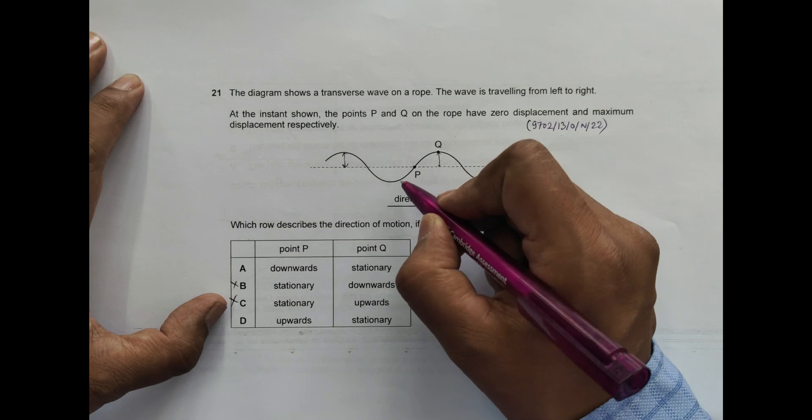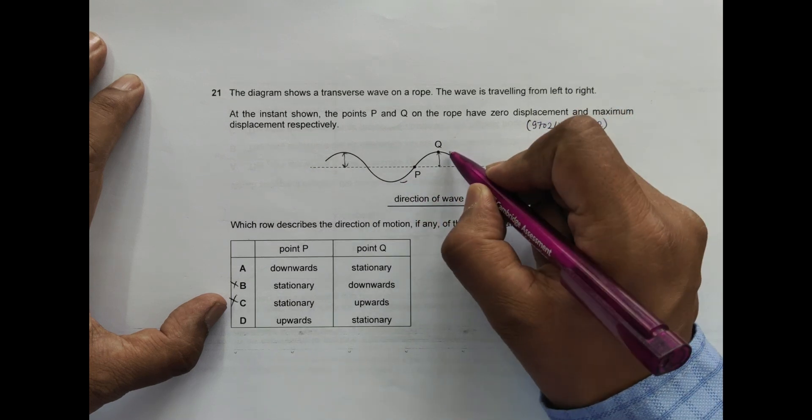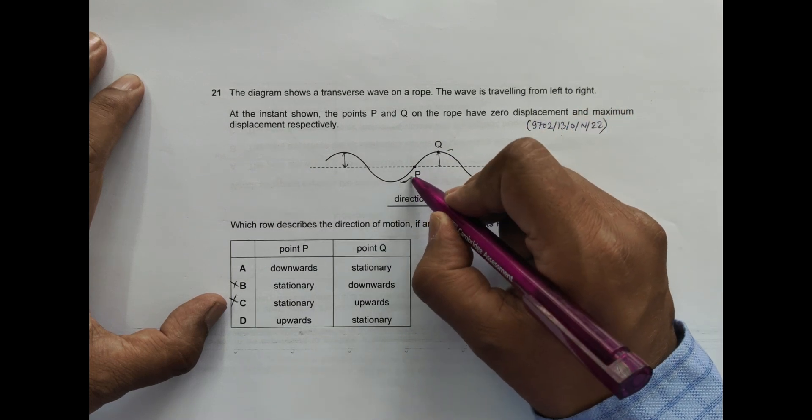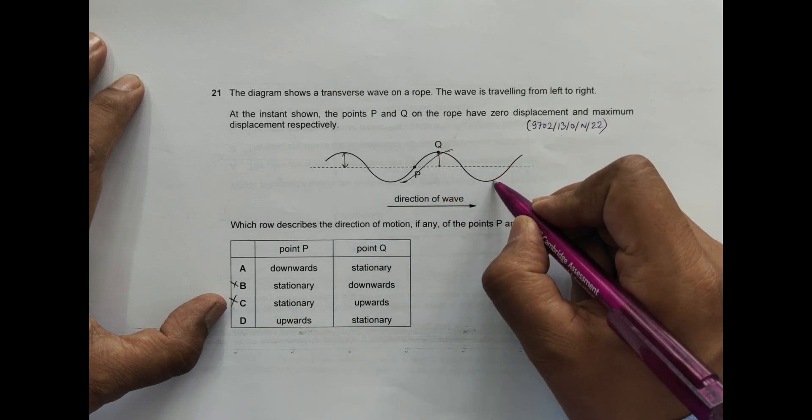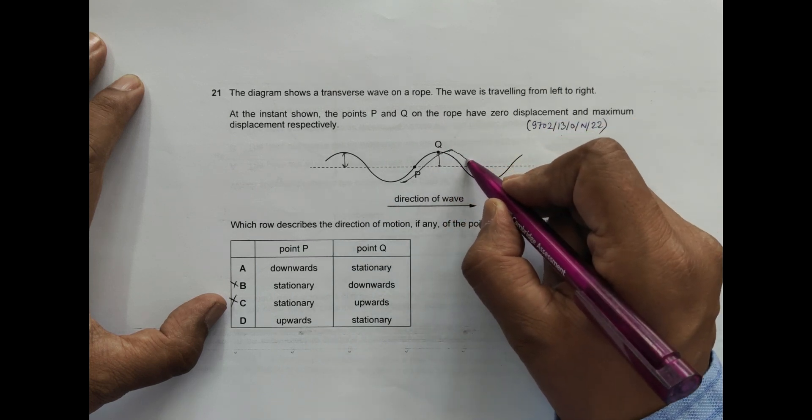So since the wave is going here, the crest should be coming here, the trough should be here. So it should be somewhat like this, the crest should be somewhat here, so it should be somewhat like this.